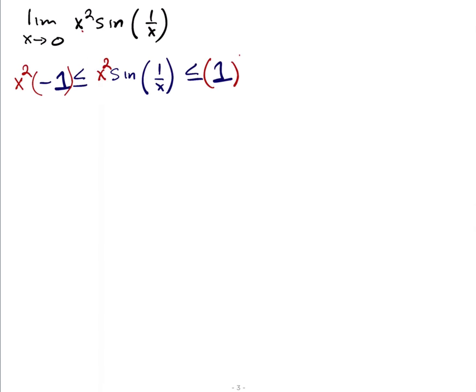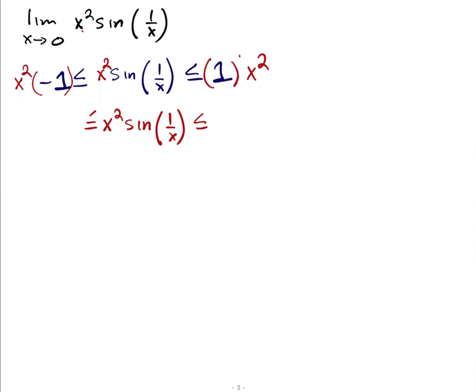Multiplying through by x squared gives us: x squared times sine of 1 over x is between negative x squared and positive x squared. This only helps us if those two bounding functions actually squeeze our function — and if their limits at the point are the same.